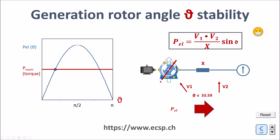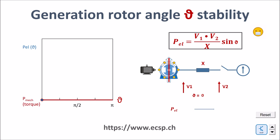The rotor angle is the angle between these two arrows. The red arrow is the axis of the DC coil in the rotor and this corresponds to the magnetic field which is generated by this rotating coil. The blue arrow is the rotating magnetic field which is rotating through the three coils of the stator.